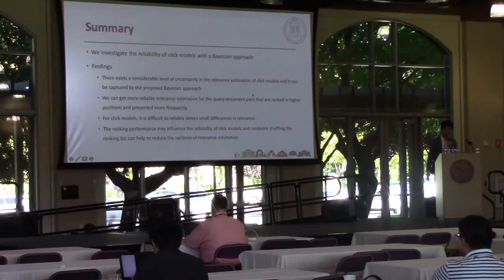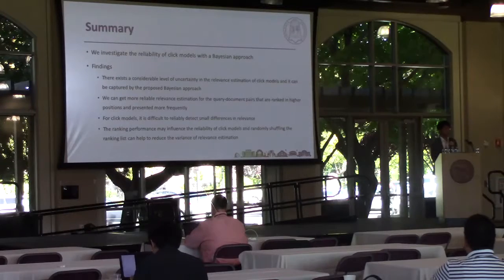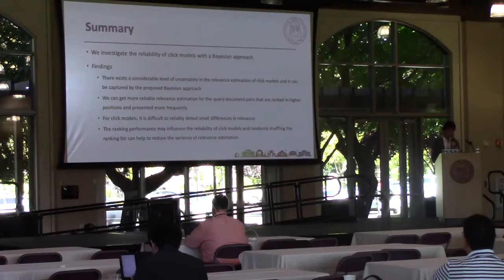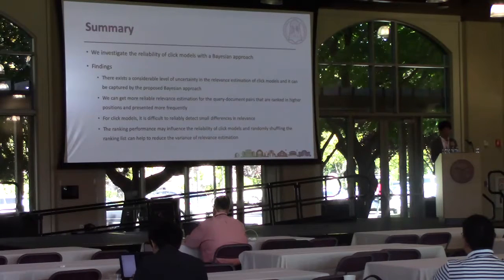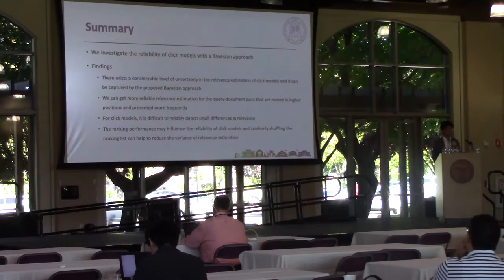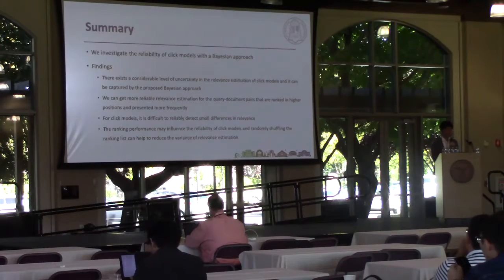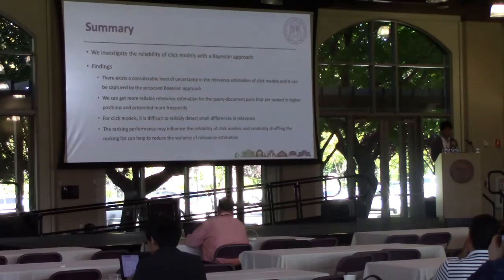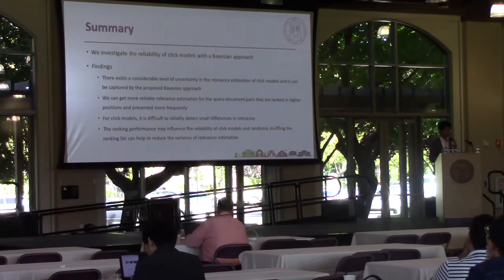To summarize, in this work we investigate the reliability of click models with a Bayesian approach. Experiments on real and synthetic datasets show that: first, there is a considerable level of uncertainty in the relevance estimation of the click model, and this uncertainty can be captured by our Bayesian approach; second, we can get more reliable relevance estimation for the query-document pairs ranked at top positions and presented more frequently; third, for click models it is really difficult to detect small differences in relevance; and finally, ranking performance may influence the reliability of click models, and randomly shuffling the ranking list may help reduce the variance of relevance estimation.